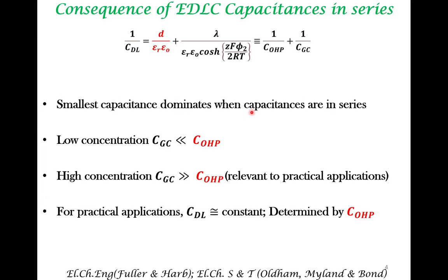Putting all these together: under practical application conditions, because the Helmholtz capacitance is the smaller of the two, the overall double-layer capacitance is predominantly determined by the Helmholtz capacitance. Since the Helmholtz capacitance formula has no dependence on voltage, for practical applications the double-layer capacitance is approximately a constant.